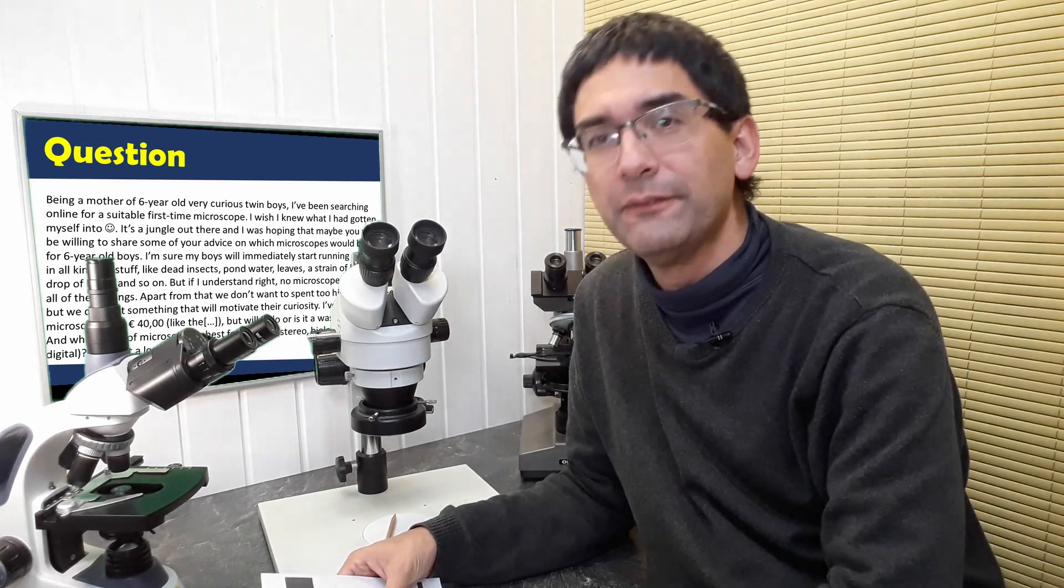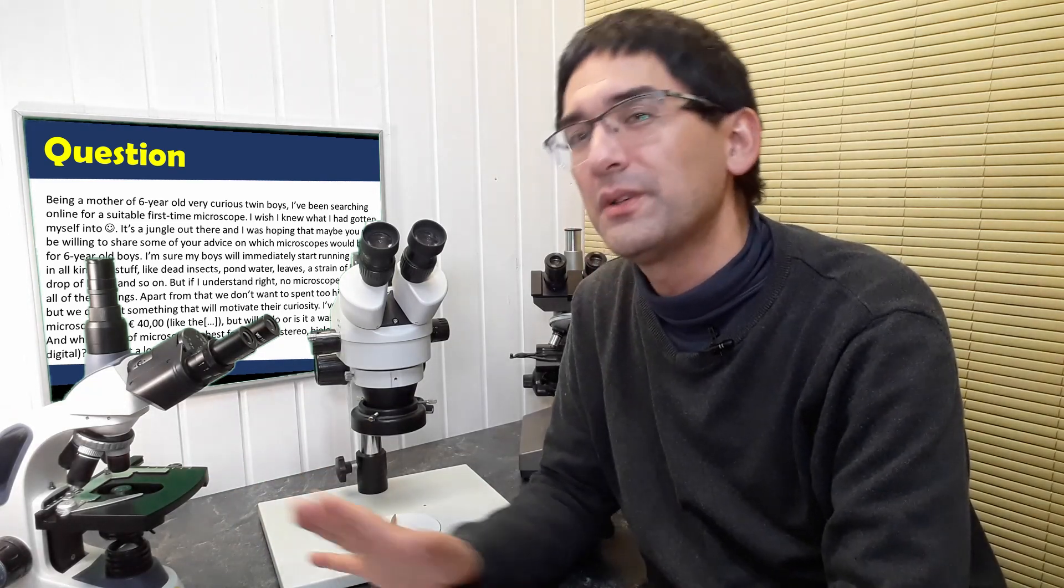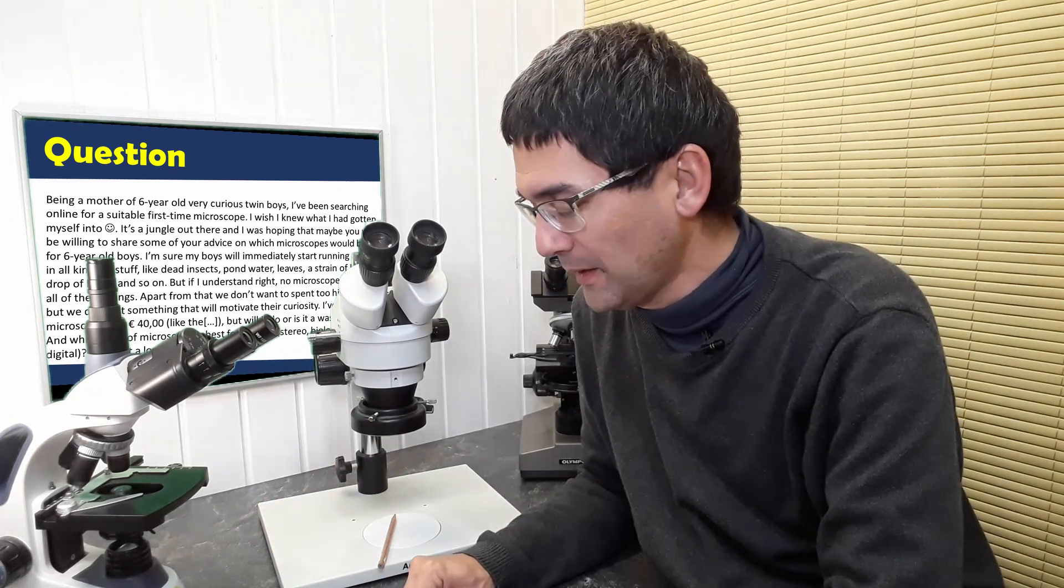Now, you listed a few of the specimens here. Dead insects, sure. Stereo microscope, pond water. Yeah, it is getting already a little difficult. It depends a little bit. I mean, you can, the larger animal life, like larvae of mosquitoes and so on. You can, of course, watch with a stereo microscope, but paramecia and those single celled organisms, indeed, they are better with a compound microscope. I have to admit that, but I would say wait without a little bit. Leaves, stereo microscope, a strain of hair, stereo microscope, a drop of blood, red blood cells. You need a compound microscope again.